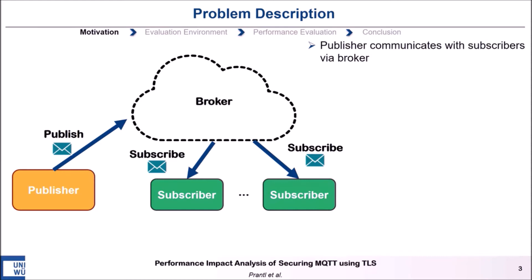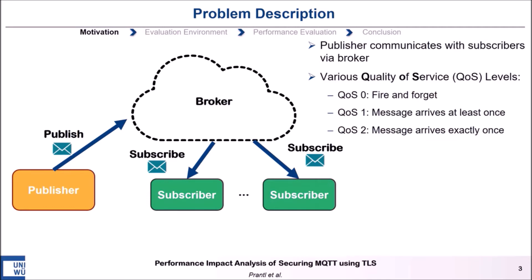In the case of MQTT, the publisher has different options regarding how important it is that its message arrives at its destination. These options are called quality of service, and in MQTT we have three of them. Quality of service level 0 means the publisher sends its message and forgets about it. Quality of service level 1 means the publisher sends its data and ensures it arrives at least once at its destination. Quality of service level 2 means the publisher ensures its message arrives exactly once at its destination.